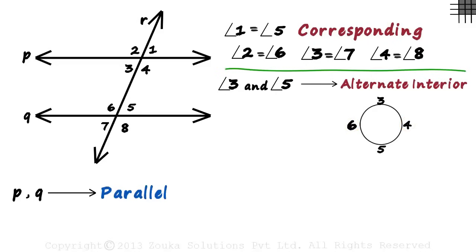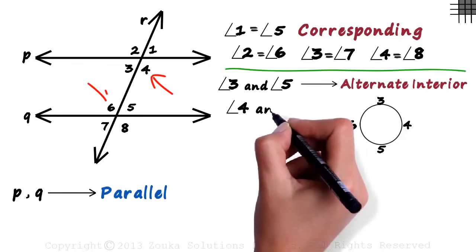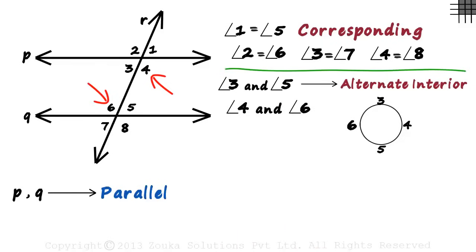Similarly, six will be alternate to four. In this diagram as well, to find alternate of three, we skip one position and take the next, which is five. And similarly, angle four and angle six are also called alternate interior angles.